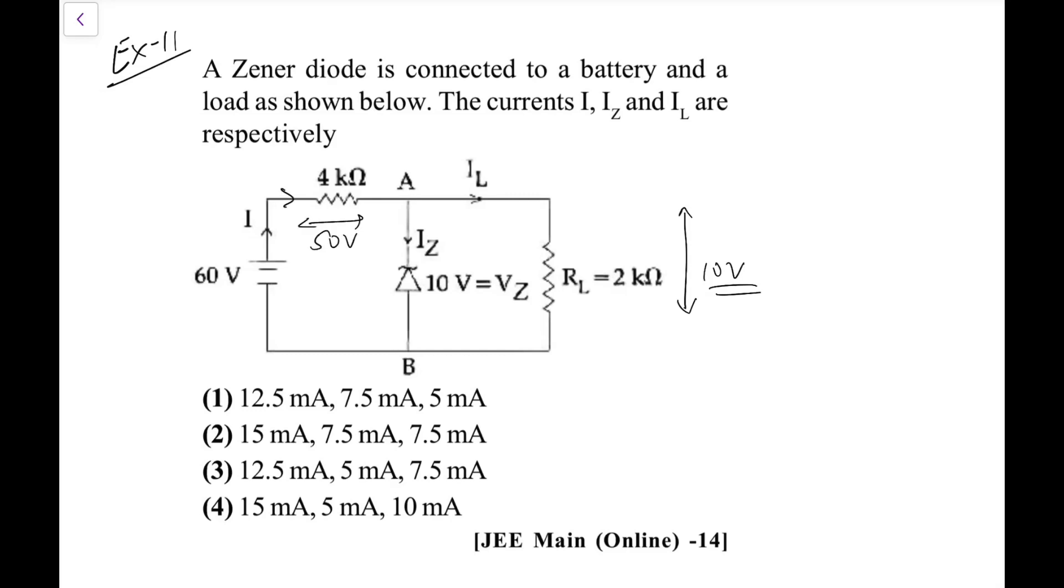So 50 means 50 by 4, again I can make this is 12.5 milliampere going here. This is 10 by 2, that is 5 milliampere. So the remaining would be 7.5 milliampere. Now you can check it, this comes out as the option first in this case.